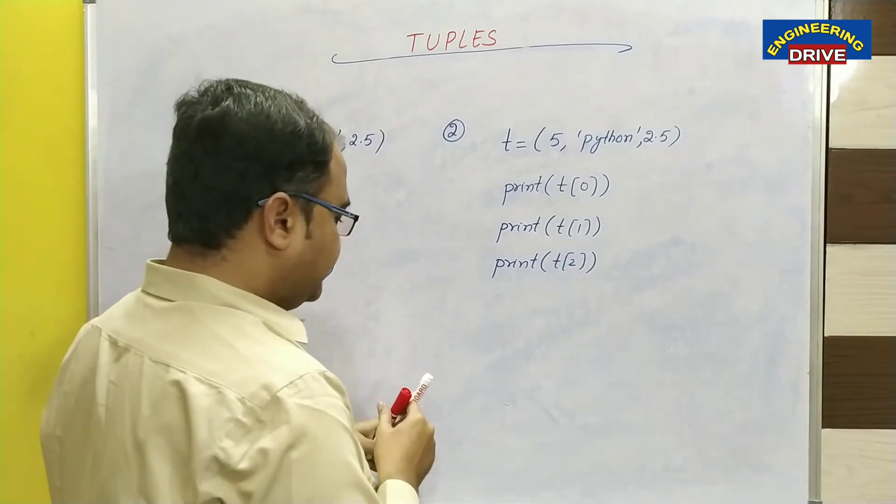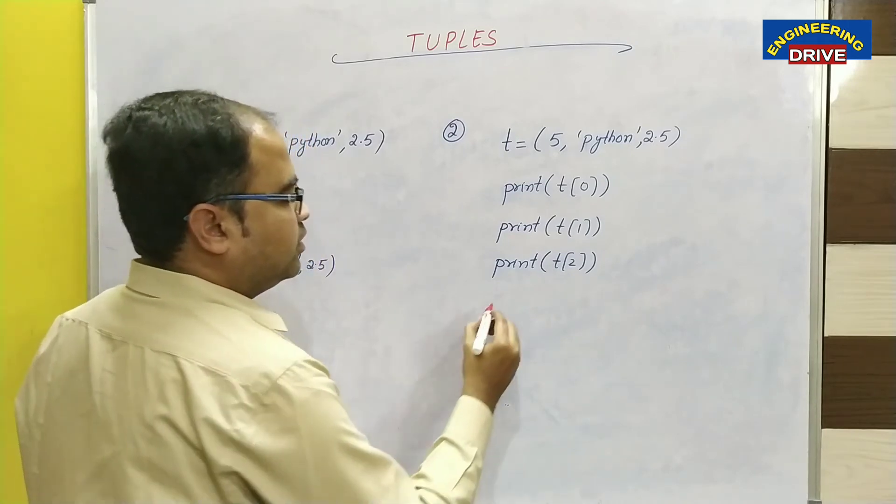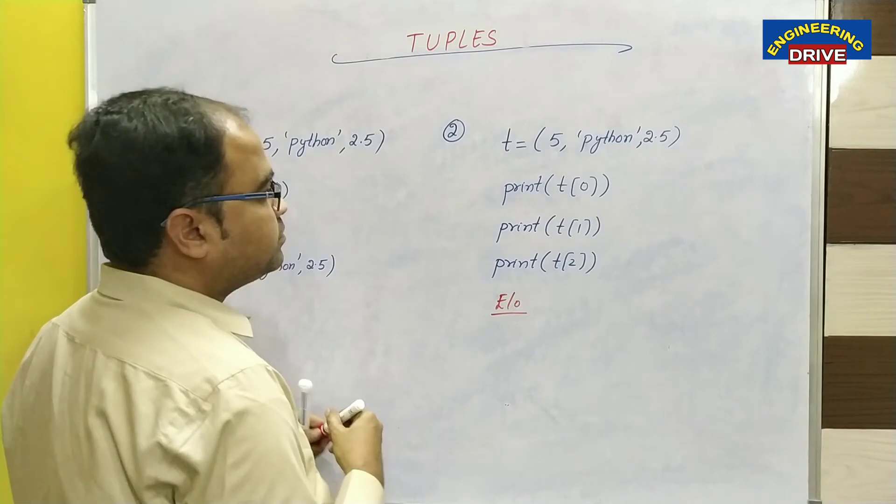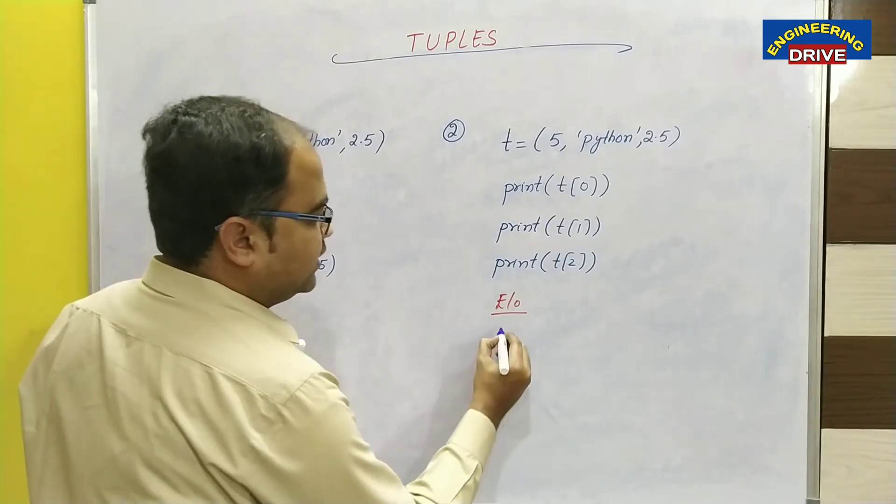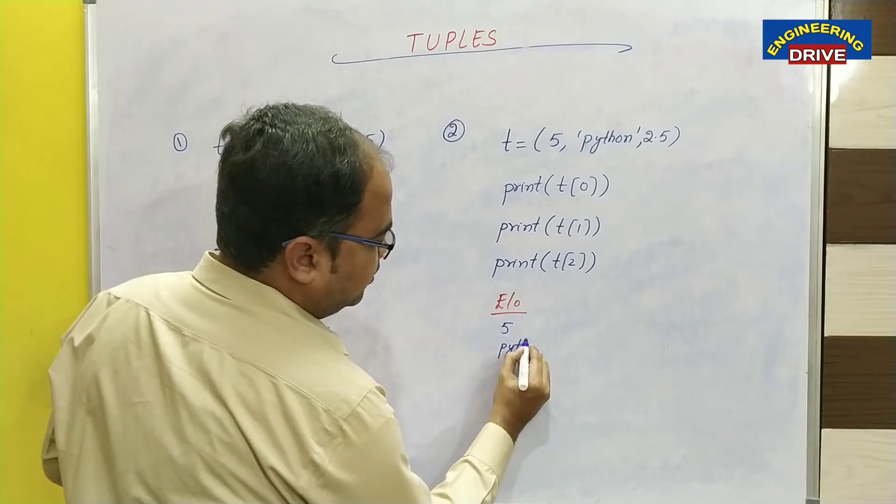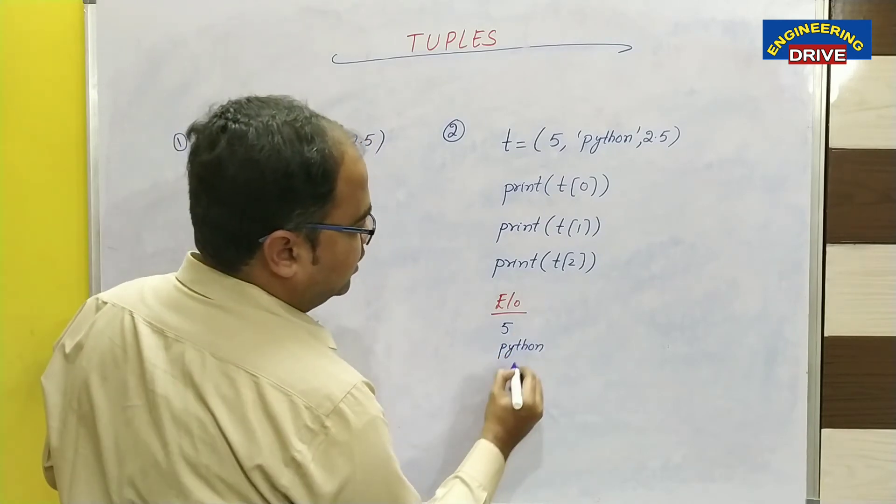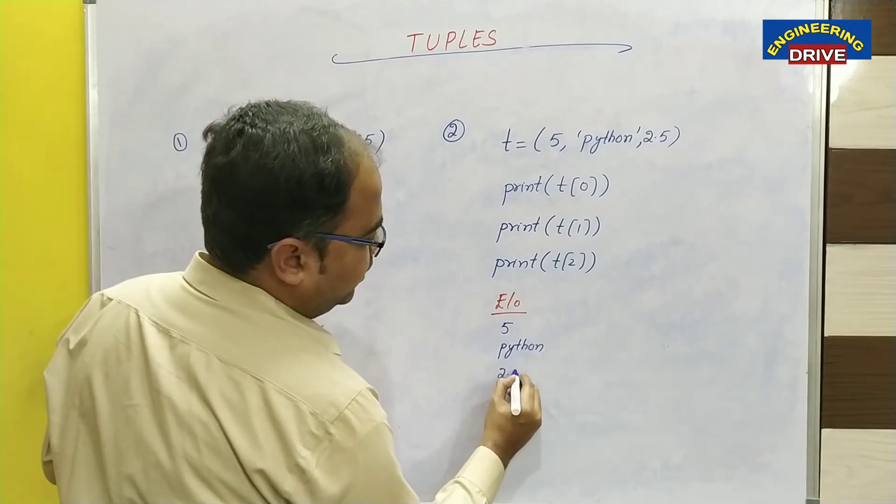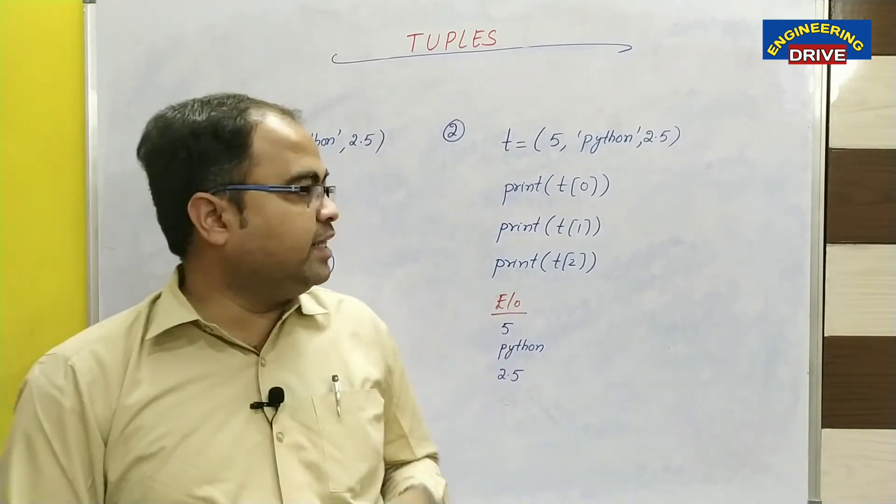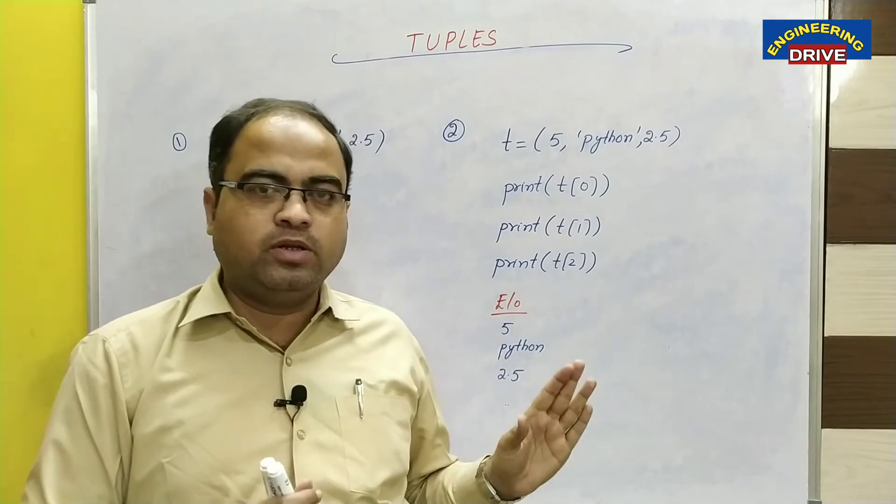Now when I execute this program, what is the expected output we will get? The expected output will be, first line we will get the answer 5, next line we will get the answer python and the third line we will get the answer 2.5. So we can easily access the contents of the entire tuple.